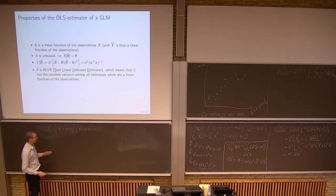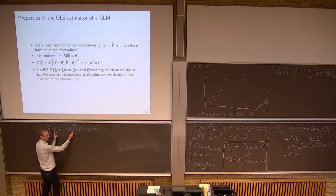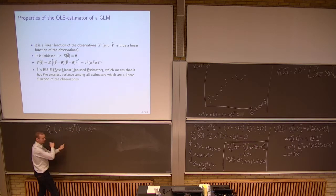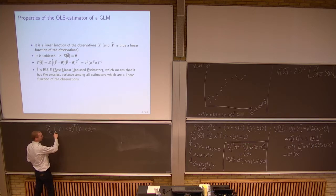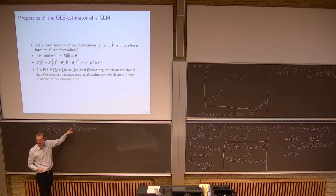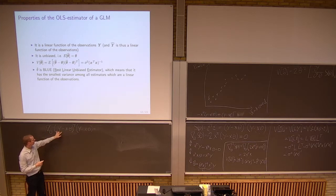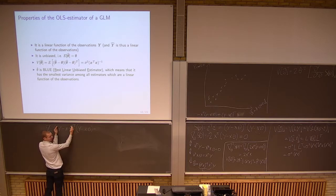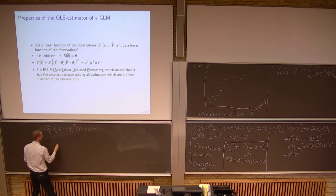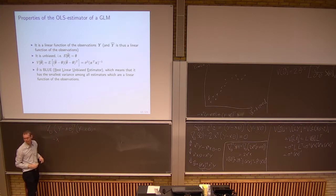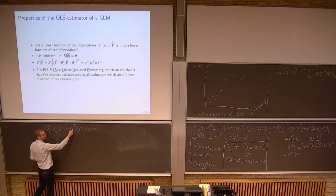What we do is differentiate the first one and multiply it with the second one, plus the reverse. If we just look at the parentheses and differentiate (y minus x theta) with respect to theta, what we get out is minus x. And then we just have to add the transpose.